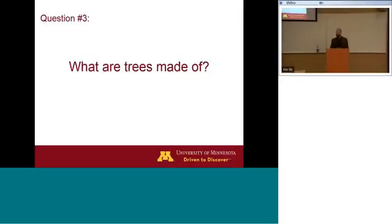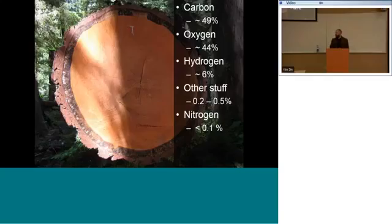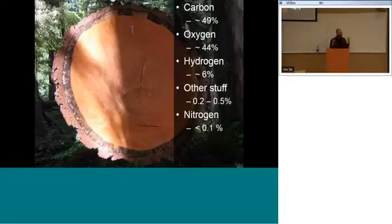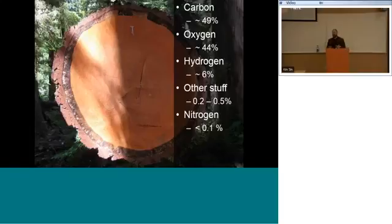What are trees made of? Mostly they're made of carbon, oxygen, and hydrogen, with some other elements including nitrogen — which is what people buy when they purchase tree fertilizers. Nitrogen is actually a pretty small component of the overall makeup. If you cut down a tree and measure the elements, it's almost entirely carbon, oxygen, and hydrogen, and then a few other minerals taken up from the soil.